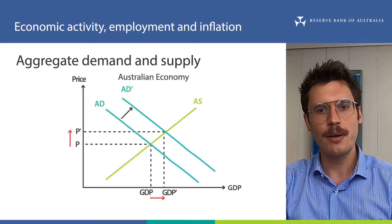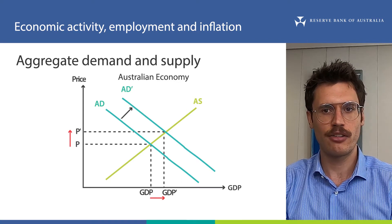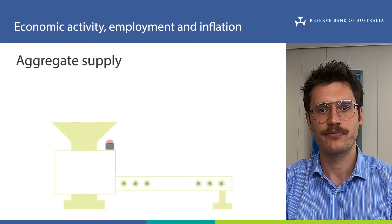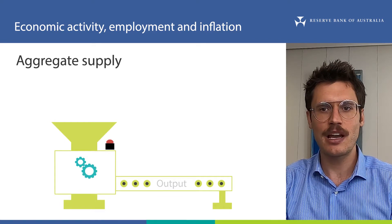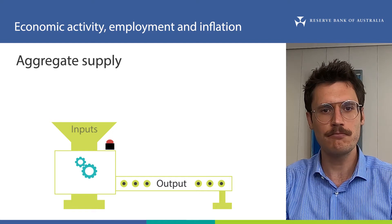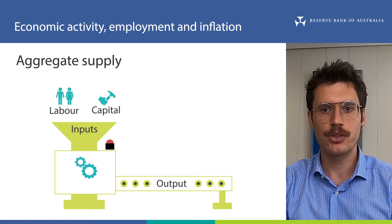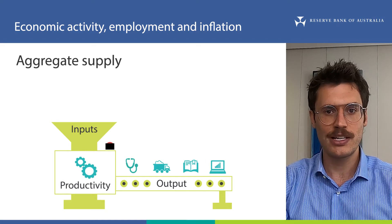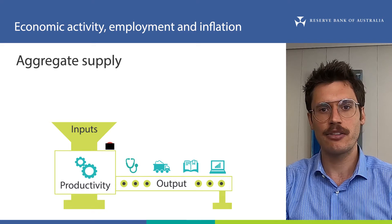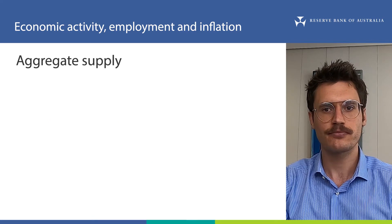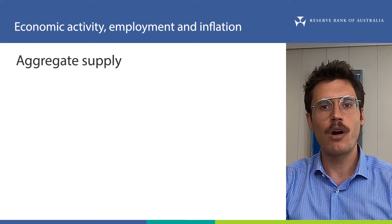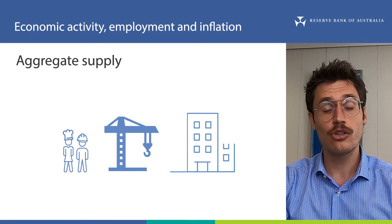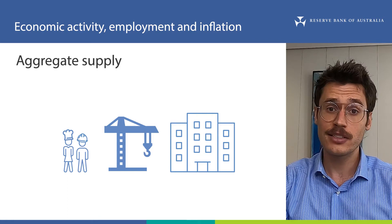However, it can take some time for aggregate supply to respond to a change in aggregate demand. When demand is higher than supply, we say that there is excess demand. Remember, aggregate supply measures how many outputs can be produced from a given amount of inputs. Inputs are things like labour and capital. How efficiently these inputs are turned into outputs is called productivity. See our video on aggregate demand and aggregate supply for a refresher on these concepts. The reason aggregate supply can take a while to respond to an increase in aggregate demand is that more workers, equipment or infrastructure could be required to increase production. This takes time to organise.